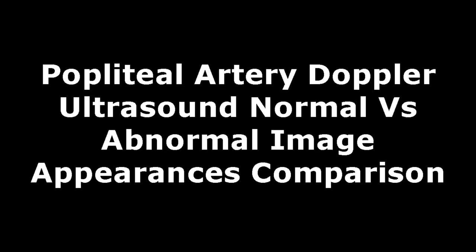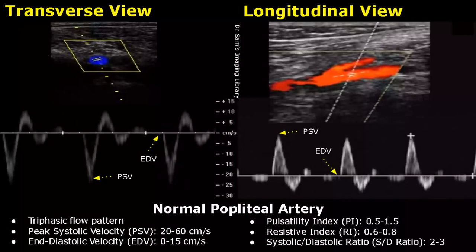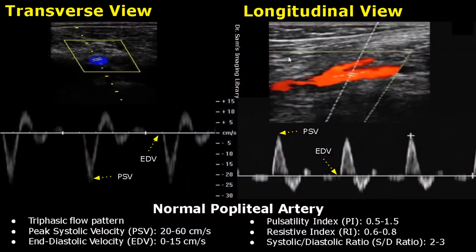Hello everyone, this is Dr. Sam and this video is about Popliteal Artery Doppler Ultrasound. These are transverse and longitudinal images of a normal popliteal artery. The normal spectral Doppler waveforms are also given. Normally, the popliteal artery has a triphasic flow pattern.